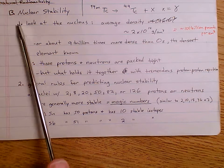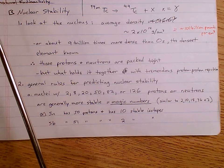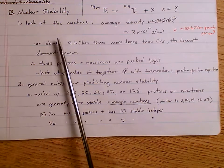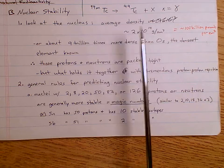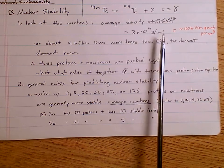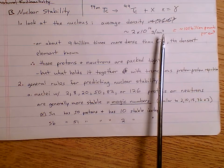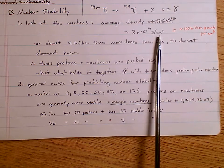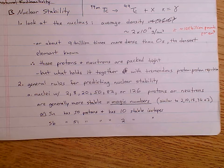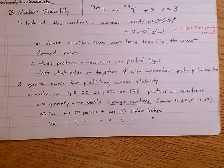When we look at the stability of various nuclei and the various isotopes of various elements, when we look at the nucleus, it's an interesting situation. The average density of a nucleus is 2 times 10 to the 14th grams per cubic centimeter. So 1 cubic centimeter — 1 milliliter volume of a nucleus — has a mass of 2 times 10 to the 14th grams, which is 2 times 10 to the 11th kilograms.